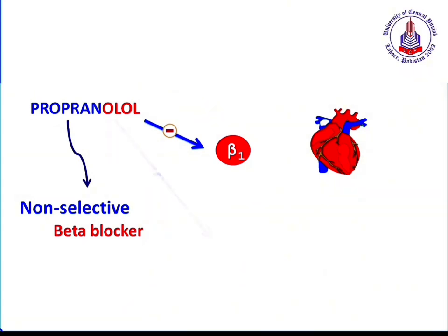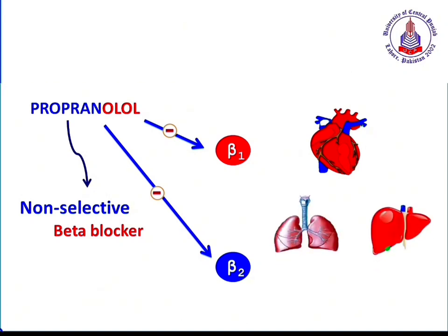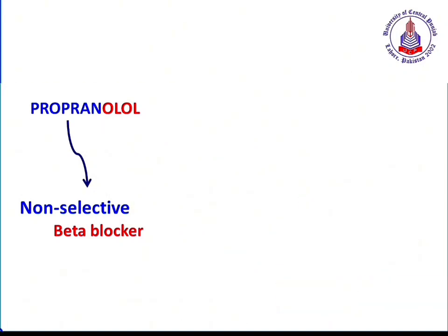However, this drug not only blocks beta-1 receptors — it can also block beta-2 receptors. So it is non-selective towards beta-1 and beta-2; it can block both receptors. By blocking beta-2 receptors, propranolol can affect many types of organs — it can affect the functionality of the lungs, liver, kidney, and blood vessels.